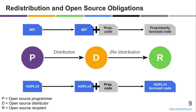Then your proprietary code is no longer proprietary, but rather AGPL-licensed, and everyone has the same rights to it. This limits the commercialization potential for those to whom the original open source programmer gives their code.